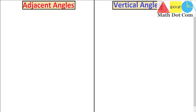Hello everyone. Today we are going to see how adjacent angles differ from vertical angles. Sometimes we just get confused about what adjacent angles are and what vertical angles are, and what their properties are while solving angles. So it is very important that you know their difference so that whenever you solve problems related to angles, you can easily use their properties to find the unknown angles.